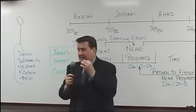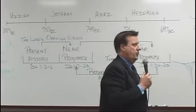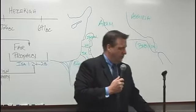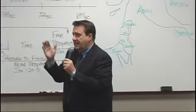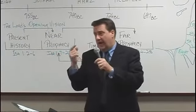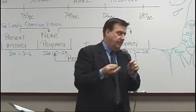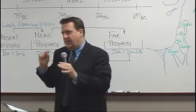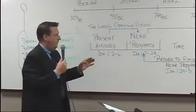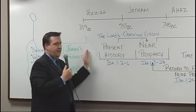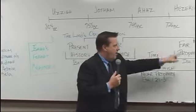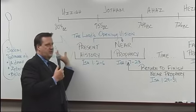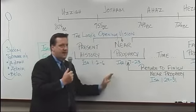Next week's lesson is actually the toughest lesson we're going to have. I'm not sure we will actually complete it next week, because the entire message spans chapters 2, 3, 4, and 5. Chapter 4 only has six verses, but it's still a lot of material — it's one passage. In that passage, he changes the formula just a little bit: he gives a far prophecy first, then goes to the present, then to the near, then to the far, and back to the near prophecy. He adds a far prophecy at the beginning but then makes the swing back into the regular formula.